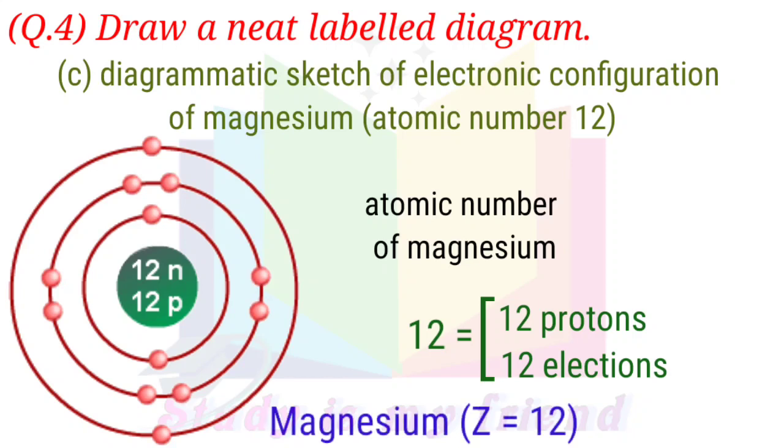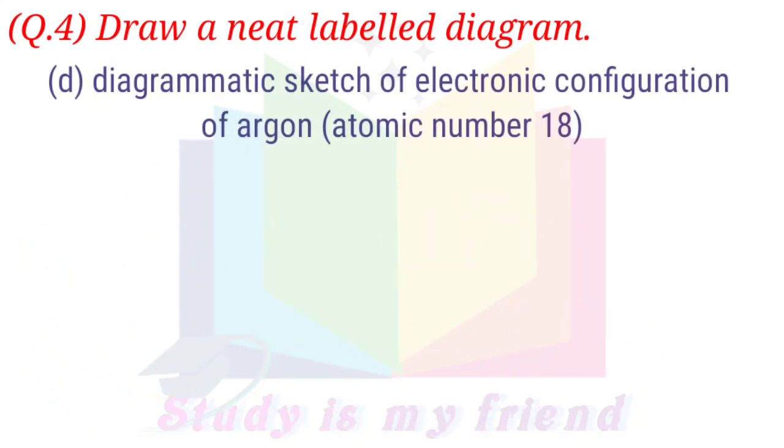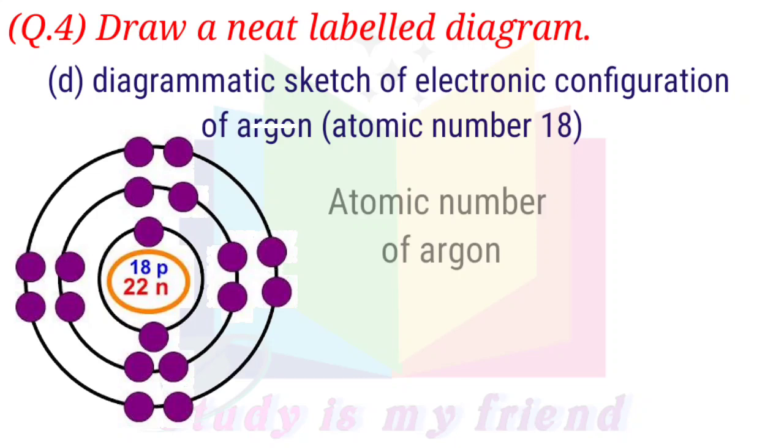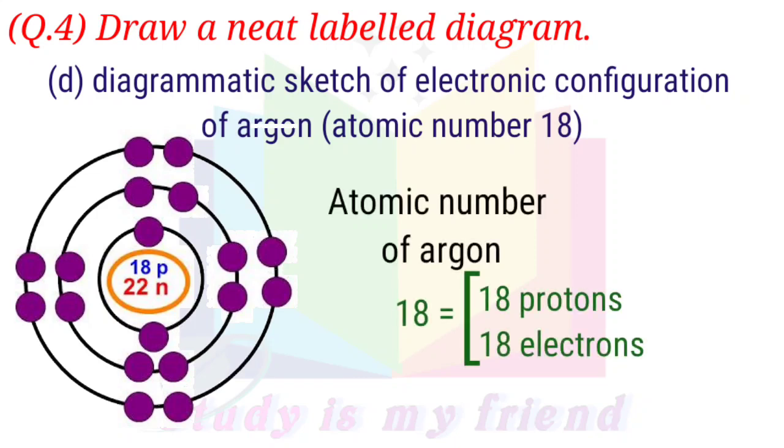Magnesium Z equals 12. Part D: Diagrammatic sketch of electronic configuration of argon, atomic number 18. Atomic number of argon 18 equals 18 protons and 18 electrons.